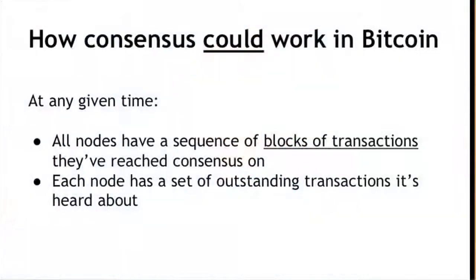How consensus could work in Bitcoin: at any given time, all the nodes in the peer-to-peer network would have a sequence of blocks of transactions they've reached consensus on. Recall that in Scroogecoin, for efficiency, we put transactions into blocks and link these blocks together on a blockchain. We could do consensus on transactions one by one — that would just be inefficient. So instead, we do consensus on a block-by-block basis.